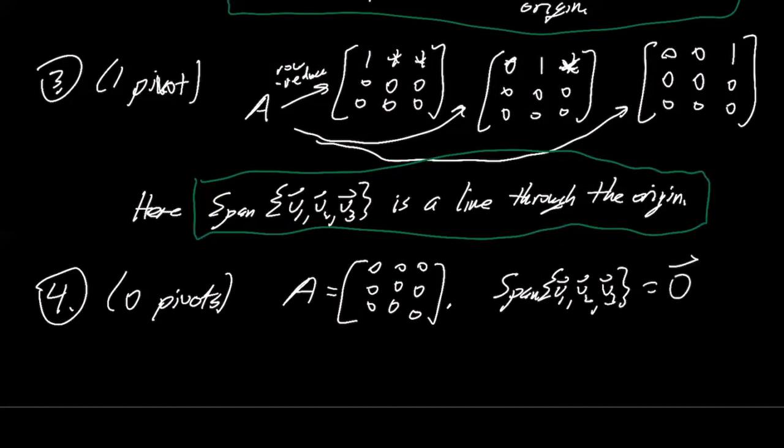That's all you can create. And so one way to think about this is that you always get something through the origin, something that's linear, right? Like that's flat, not curvy. You either get a line or a plane or all of space or just the zero vector through the origin. And you get every possible dimension, which matches the pivots, right? If you have one pivot, you get a one dimensional span.